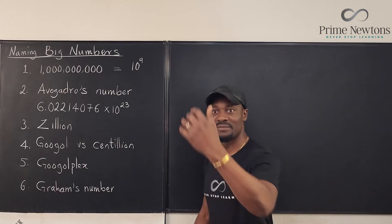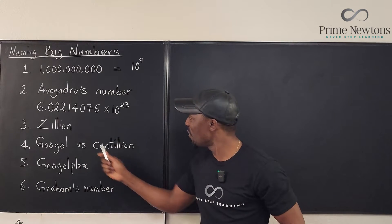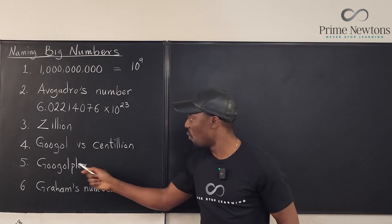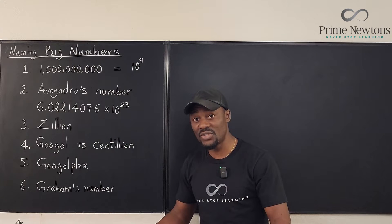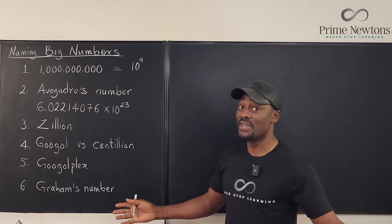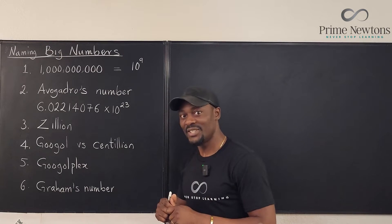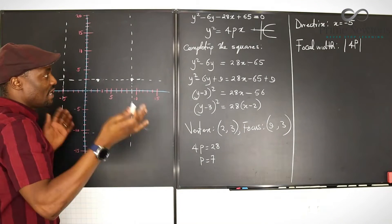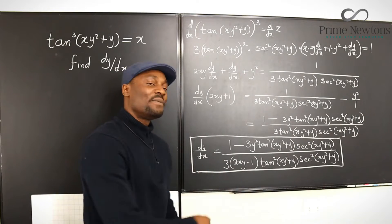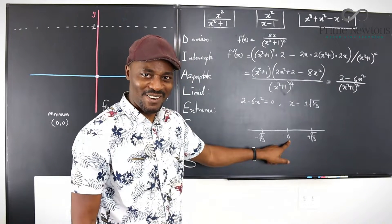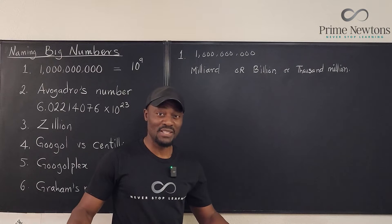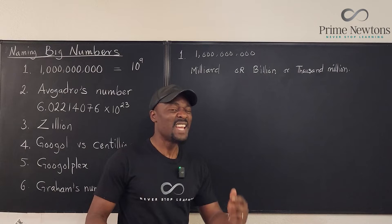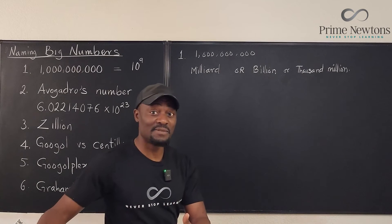But some of us are stubborn — you just want to name it. You want to know what a zillion is, what a Googol is, what a centillion is, or what a Googolplex is. Well if you're interested in all that you should keep watching — and if you're not interested, still keep watching. Let's get into the video. So let's start with the smallest number we've got today: a billion. I think by convention these days, scientifically, this is going to be a billion.